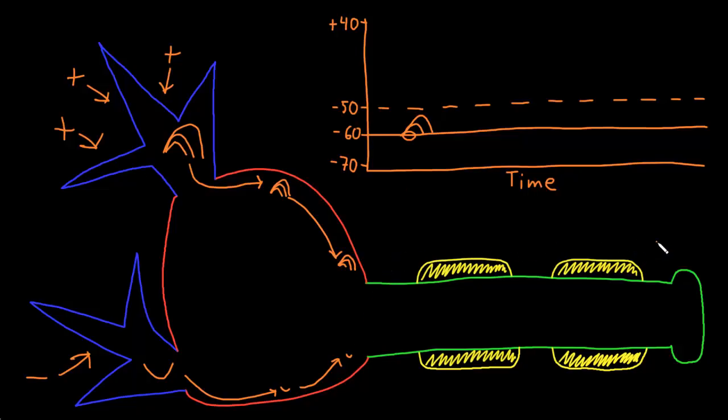Action potentials being conducted down the axons of neurons are the way that neurons can transmit information over a wide range of distances, which may be one meter or more. Action potentials have some big differences from graded potentials in that they usually have the same size and duration for any particular neuron, and they are usually conducted the entire length of an axon basically unchanged regardless of the distance of that axon.